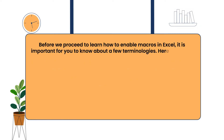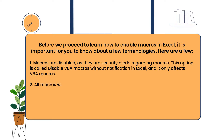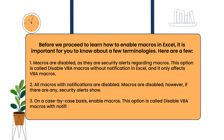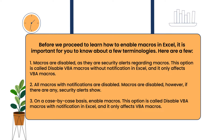Before we proceed to learn how to enable macros in Excel, it is important for you to know about a few settings. First, macros are disabled and security alerts regarding macros are also disabled. This option is called 'Disable VBA macros without notification' in Excel and it only affects VBA macros. Second, all macros with notification are disabled. Macros are disabled; however, if there are any security alerts, they show on a case-by-case basis so you can enable macros. This option is called 'Disable VBA macros with notification' in Excel.